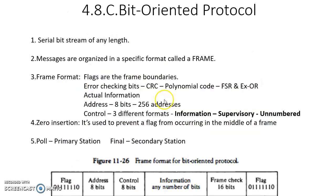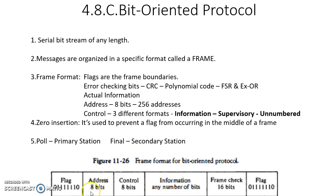Now let us look at the second type of protocol — bit-oriented protocol. Here, instead of characters, a serial bit stream of any length is used as the information. This information, of any number of bits, is not sent alone; it is sent along with address, control, frame check bits, and flags. These flags indicate the boundaries of the frame — they indicate the start and the end.